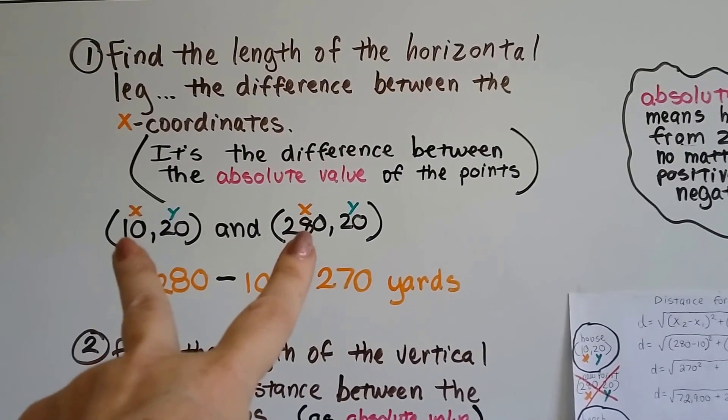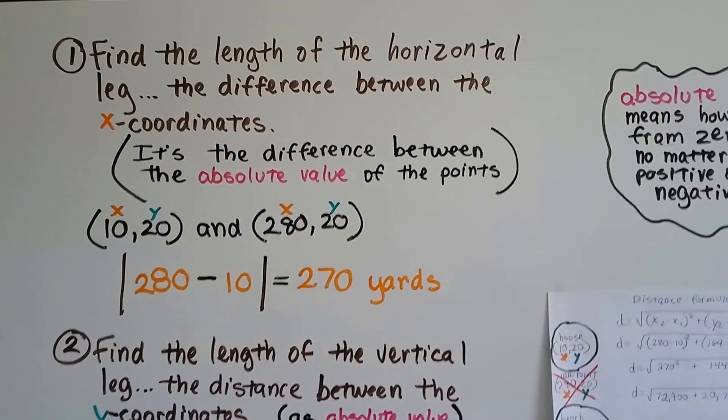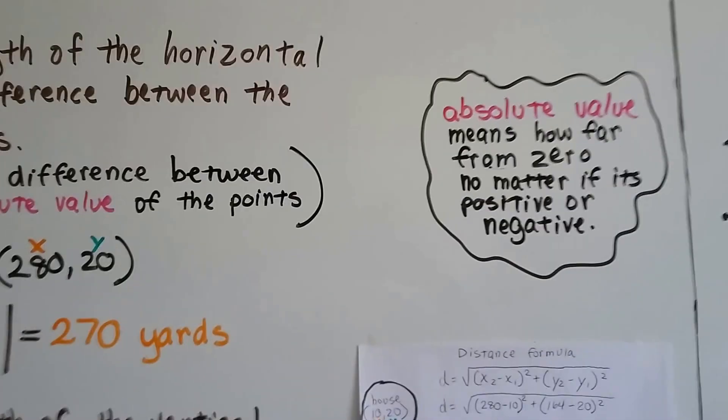But all you have to do is flip the 280 into the front, and the difference between these points is the absolute value between them. So you could say negative 270, but it's the absolute value, so we wouldn't use the negative sign. Remember what absolute value is?